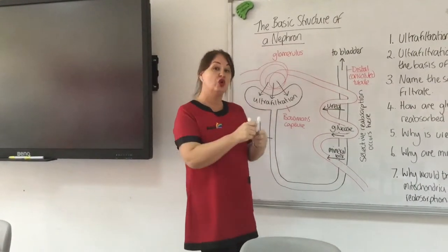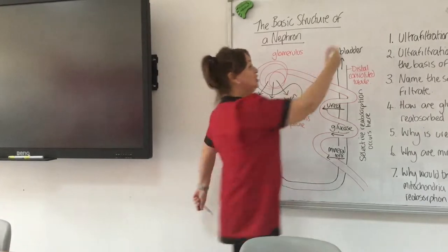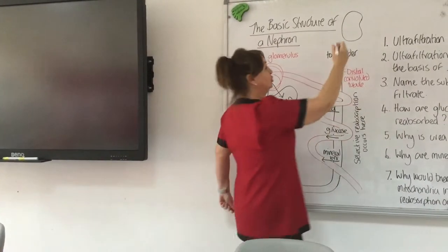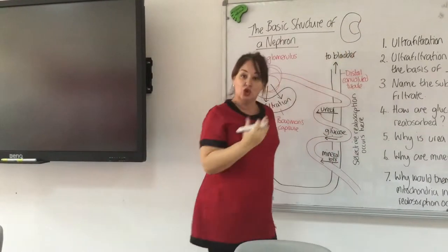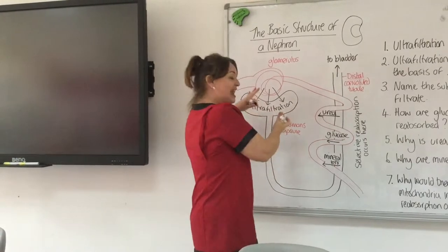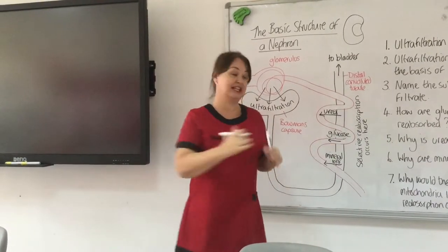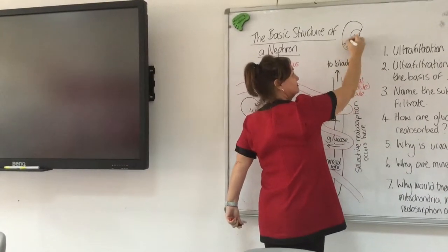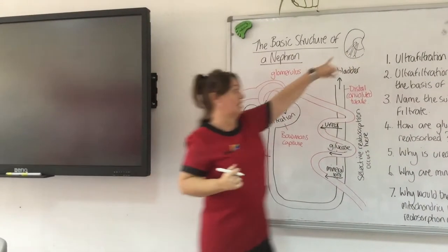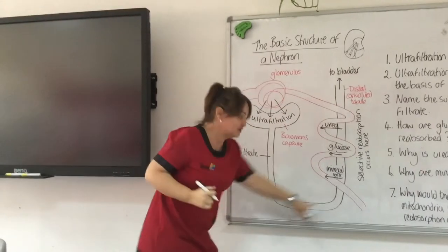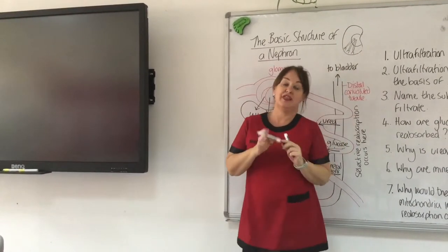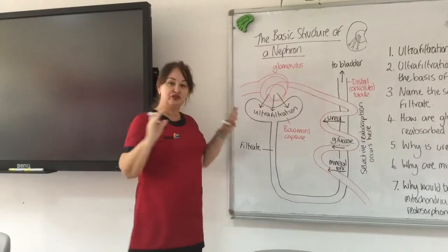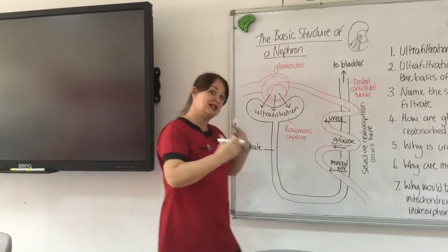So what is the nephron? When you've seen a kidney — perhaps if you've dissected one — you'll know it has an inner medulla and an outer cortex: two very distinct regions. The nephron is the basic unit of the kidney. We've got lots of nephrons on the outskirts and lots of loops going down into the inner medulla. There are two big processes we need to know: ultrafiltration and selective reabsorption.